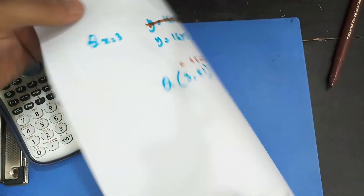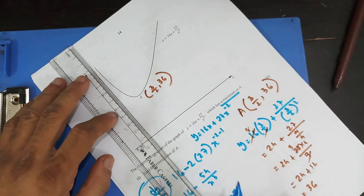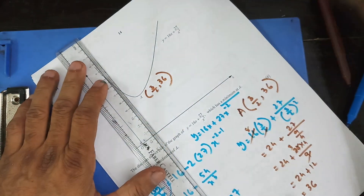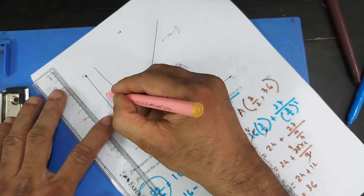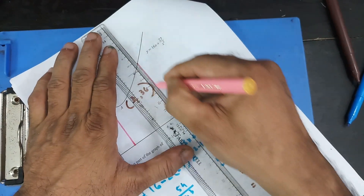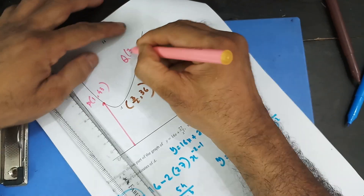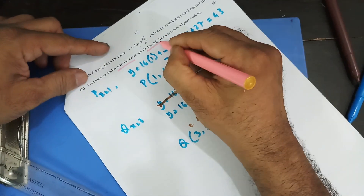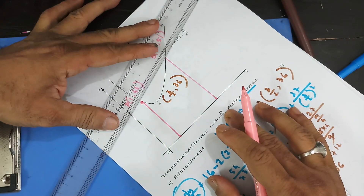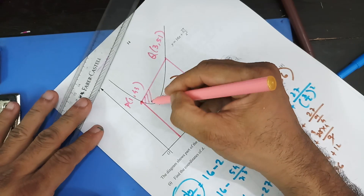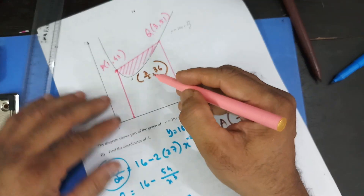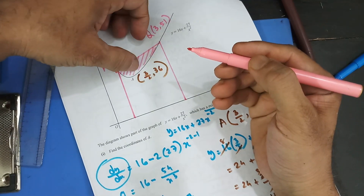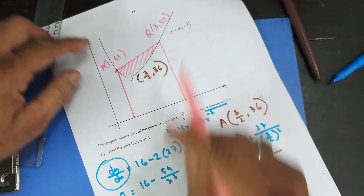Let me draw this: P is at (1, 43) and Q is at (3, 51), with the minimum A at (3/2, 36) in between. The question asks to find the area enclosed by the curve and the line PQ — that shaded region. To find it, I need the area of the trapezium, then subtract the area under the graph between x equals 1 and x equals 3.